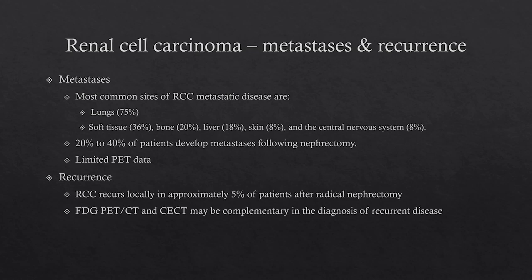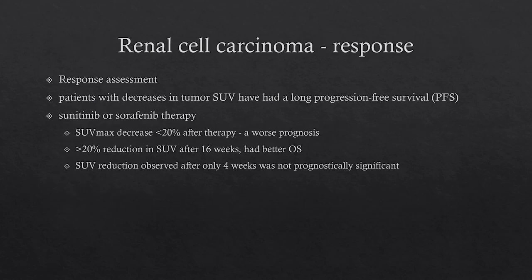Common sites of metastases in RCC are the lungs, and less common sites are soft tissue, bone, liver, skin, and CNS. About 20% to 40% of patients would develop metastases following nephrectomy. There is limited PET data in assessing these metastases for recurrence. Local recurrence occurs in about 5% after radical nephrectomy, and FDG PET-CT and contrast-enhanced CT may be complementary in diagnosing recurrent disease. For treatment response, when the tumor SUV decreases, patients tend to have longer progression-free survival. With sunitinib or sorafenib therapy, a decrease of less than 20% has worse prognosis, whereas more than 20% after 16 weeks had better overall survival.